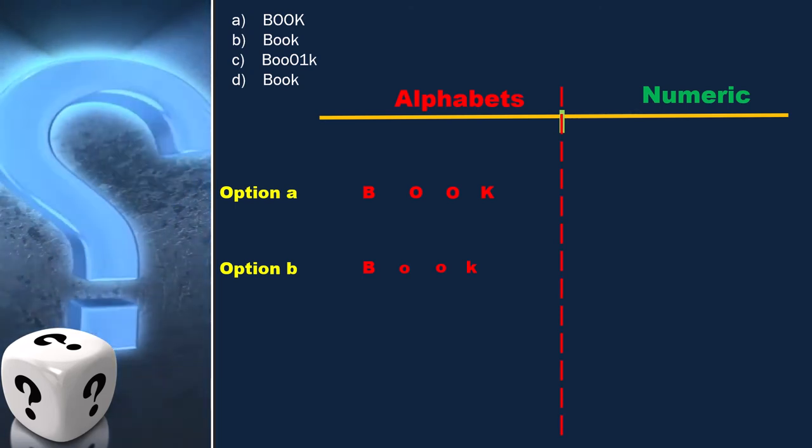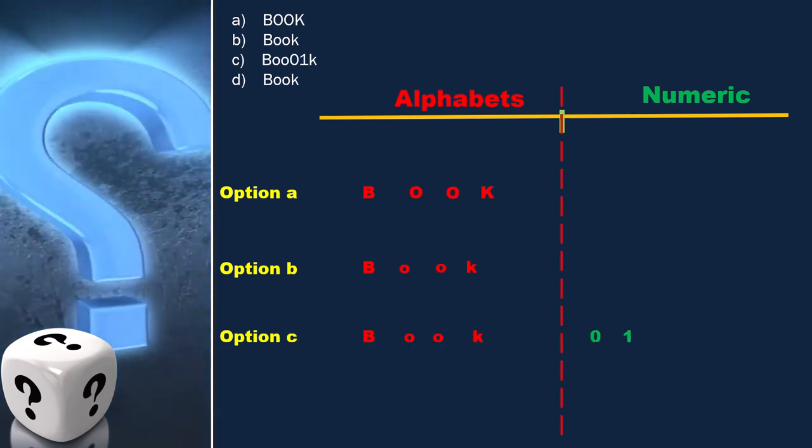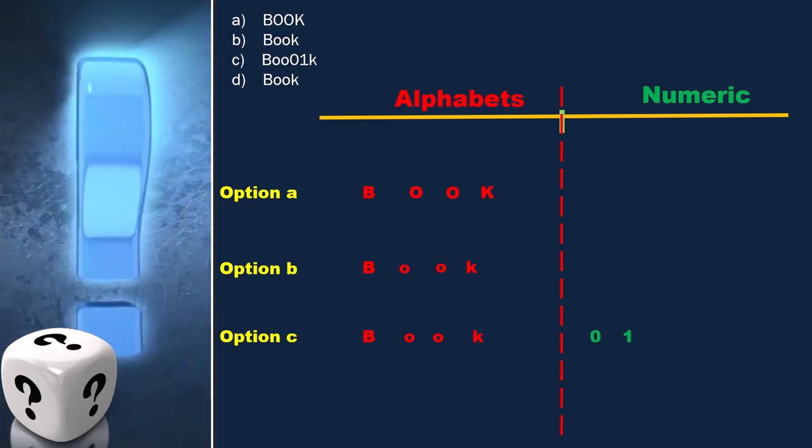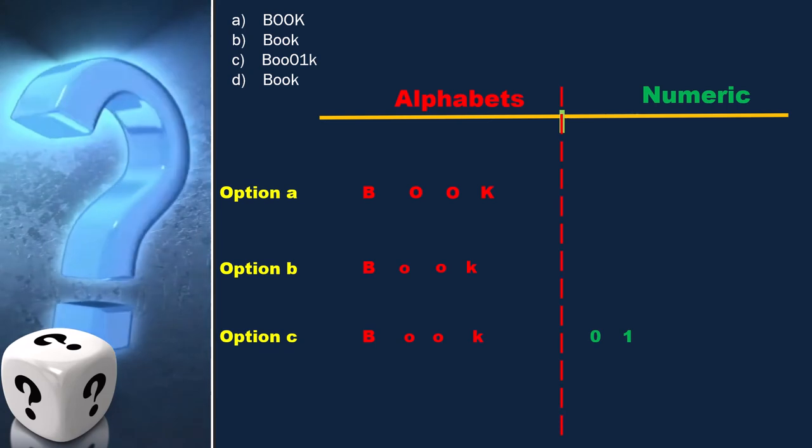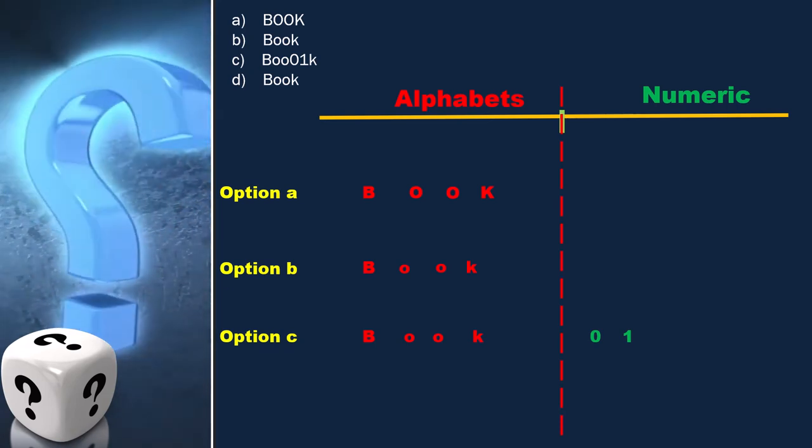Now let's see option C, and we can place it like this. Now we can see that it covers both classes. And here, B is capital, O, O, K is in small case, and 0 and 1 is numeric.